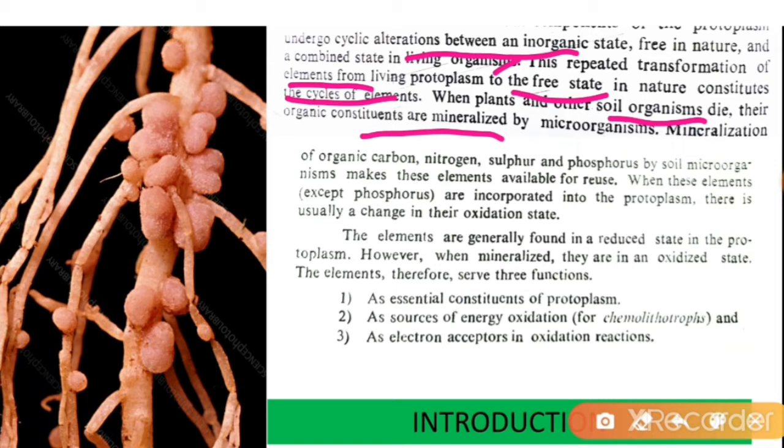Mineralization of organic carbon, nitrogen, sulfur, and phosphorus by soil microorganisms make these elements available for reuse. When these elements are incorporated into the protoplasm, there is usually a change in their oxidation state.